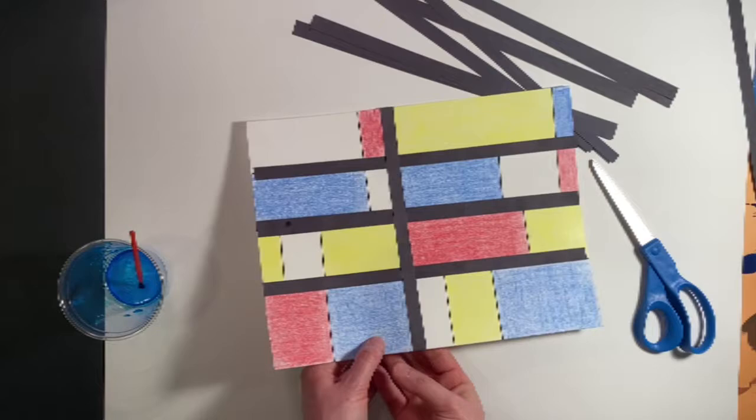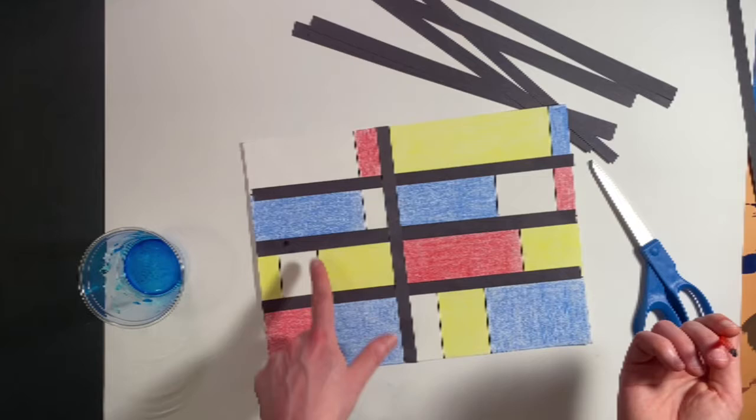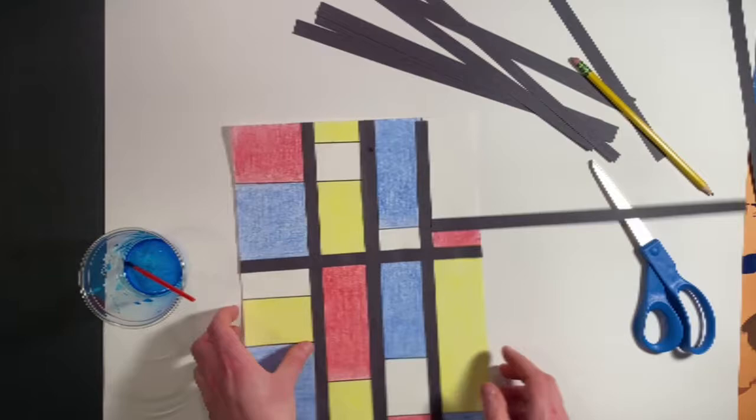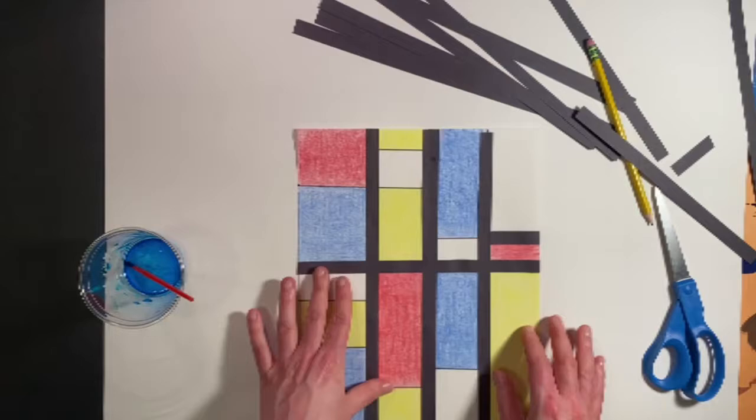If the line goes all the way across like mine did there, the easy way to glue is to just paint right onto the paper. The glue paint, we call it.